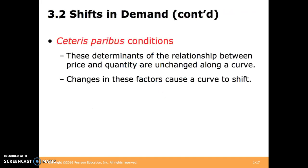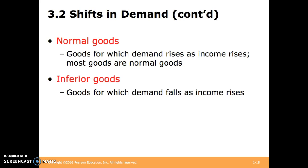Ceteris paribus conditions: these determinants of the relationship between price and quantity are unchanged along a curve; changes in these factors cause a curve to shift. Normal goods are goods for which demand rises as income rises — most goods are normal goods. Inferior goods are goods for which demand falls as income rises. For example, movie tickets are a normal good — if income goes up, you're more likely to buy more tickets. Off-brand cereal could be an inferior good — if your income went down, you might buy more of it.